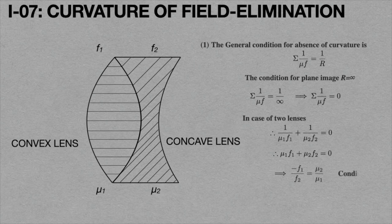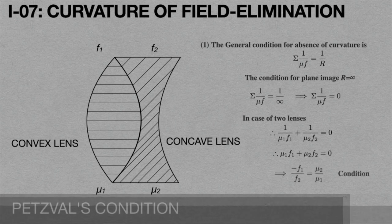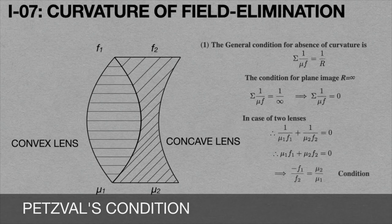That implies minus F1 by F2 equals mu2 by mu1. So this is the condition for the elimination of curvature field aberration. This is also called Petzval's condition.